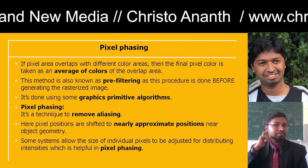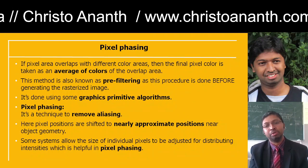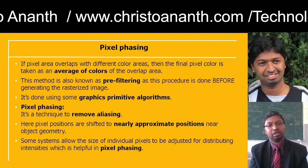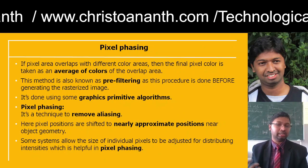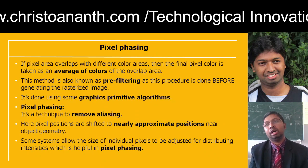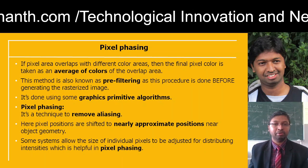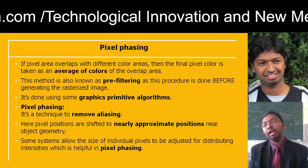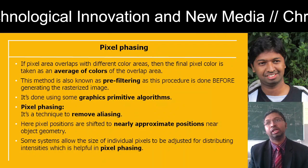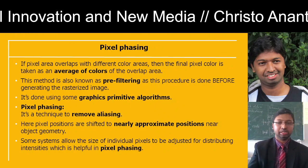Pixel phasing allows the size of individual pixels to be adjusted for distributing the intensity. It is a very useful technique to remove aliasing and can shift to nearly approximate positions near the object geometry.